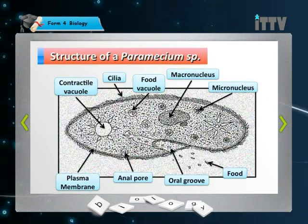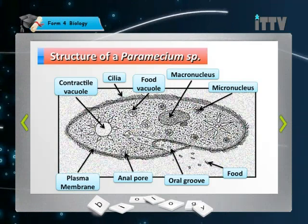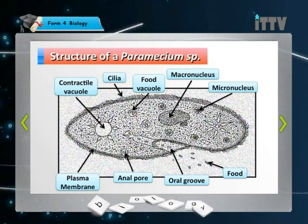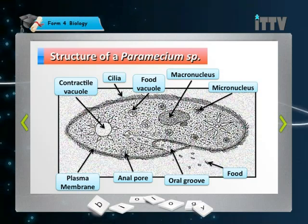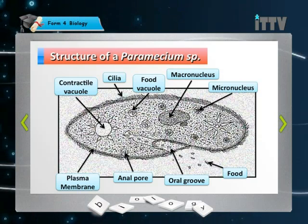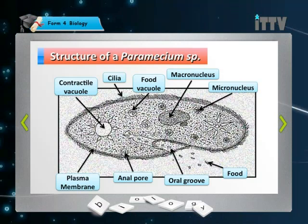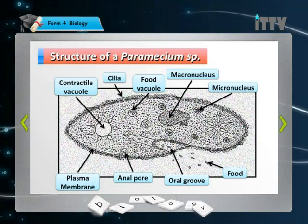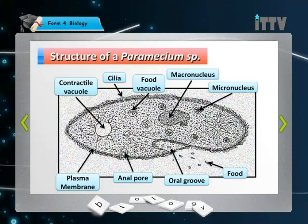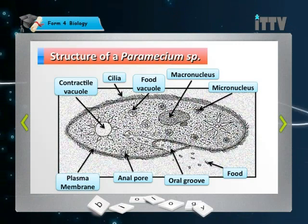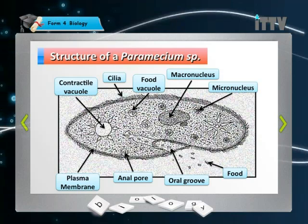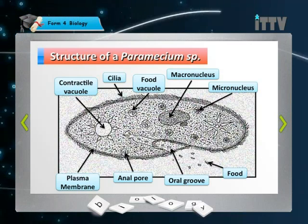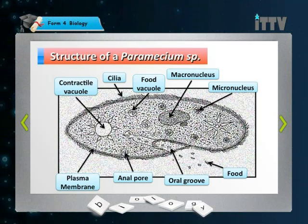Now let's look at the basic structure of a Paramecium. From the left, you can see the contractile vacuole is filled with fluid. On the other end of the Paramecium, you can see another contractile vacuole that is not filled. Looking closely, the cilia are little hair-like structures — we will see the importance of these cilia in a while.